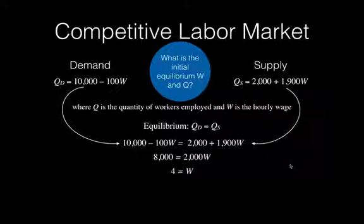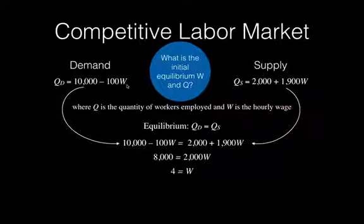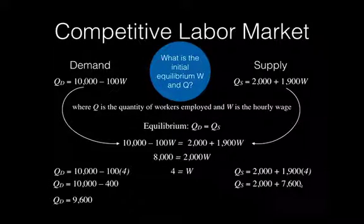Now we want to determine the equilibrium quantity. I always recommend that students place the W into both the demand and supply equation. The rationale is that you should get the same answer for QD and QS. If you don't, the likeliest explanation is that you calculated the equilibrium wage rate incorrectly. So we put 4 in place of W in the demand equation: QD equals 10,000 minus 100 times 4, which is 10,000 minus 400, so QD equals 9,600. QS equals 2,000 plus 1,900 times 4, which is 2,000 plus 7,600, giving us 9,600.